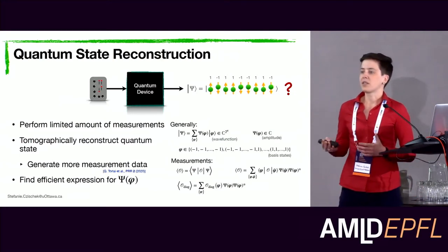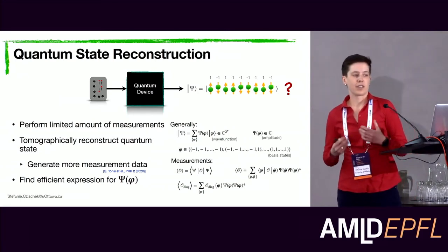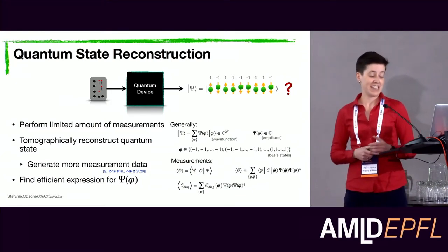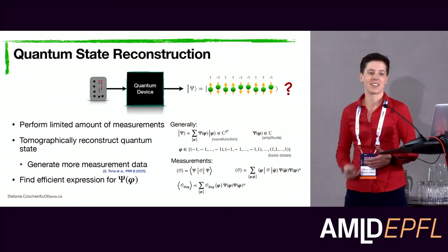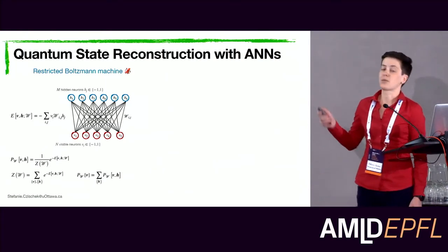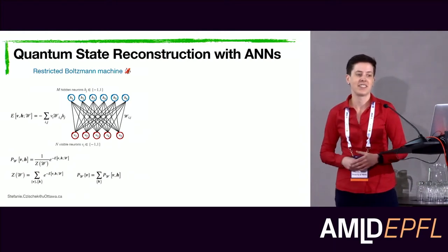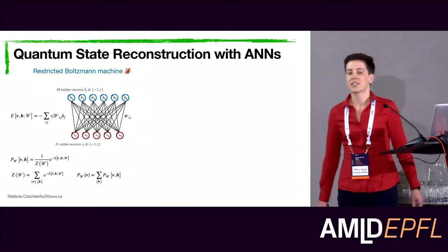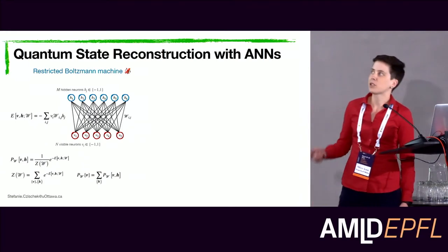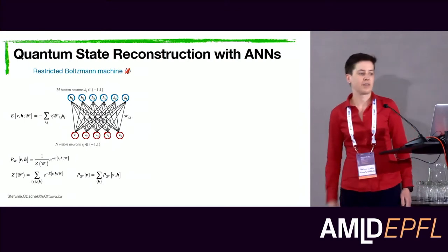The idea of quantum state reconstruction is to find an efficient expression for the wave function amplitudes from measurement outcomes described by the squared-amplitude probability distribution, using a classical computer. By efficient, I mean an expression described by a polynomially scaling number of parameters. One approach that has gained a lot of attention for being very powerful and general is to use an artificial neural network as a wave function ansatz. People have studied different network architectures; I will focus on one simple but powerful one — the restricted Boltzmann machine, which we already saw in the previous talk.